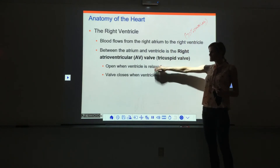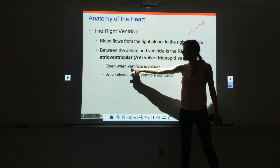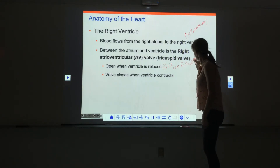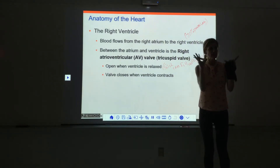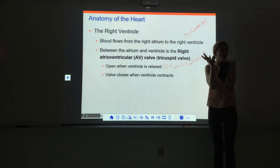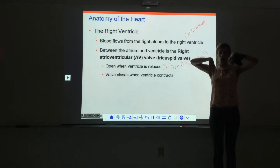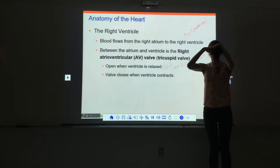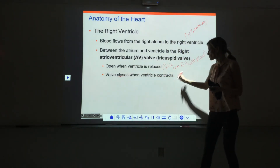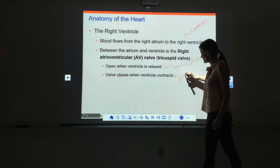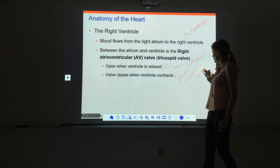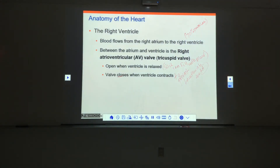The tricuspid valve is open when the ventricle is relaxed so it can fill with blood. When the ventricle contracts to eject blood, the tricuspid valve closes to prevent backflow into the right atrium. When these AV valves close, that produces the first heart sound.